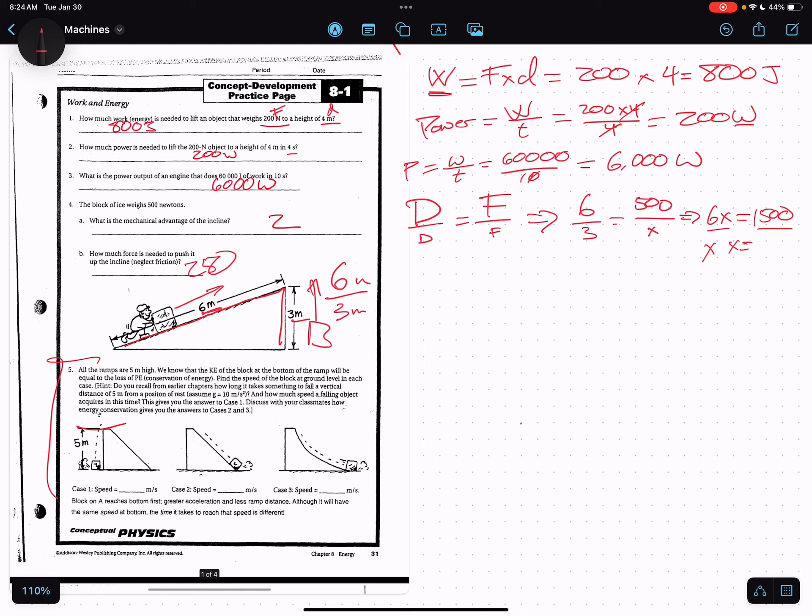We know that the kinetic energy at the bottom of the ramp will be equal to the loss of potential energy at the top. They're using G as 10. I'm going to use it as 9.8 because we'll use this more often. But the idea is this: The potential energy at the top, PE at the top, is going to be equal to the KE at the bottom.